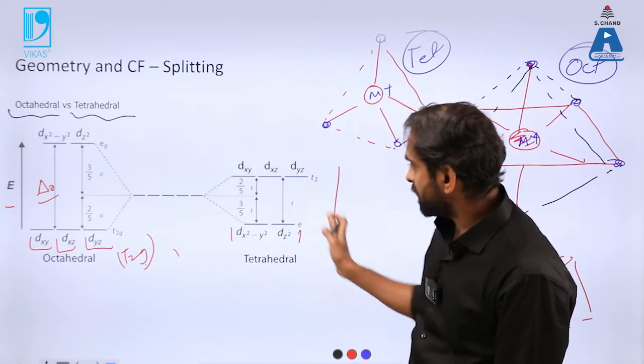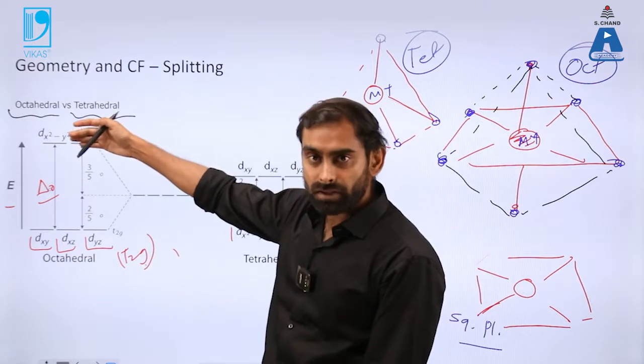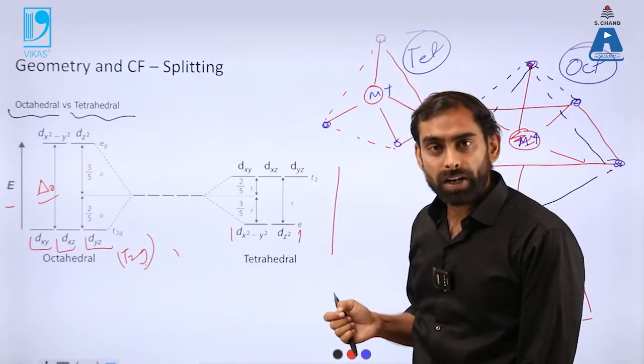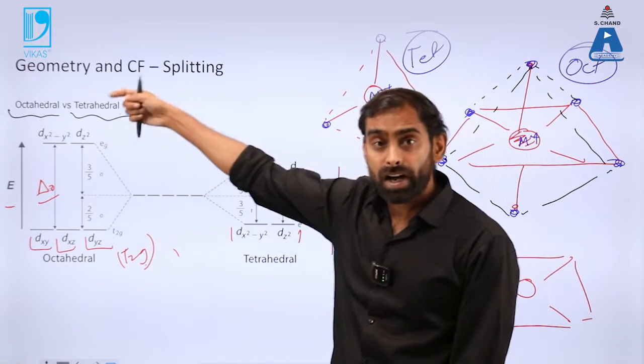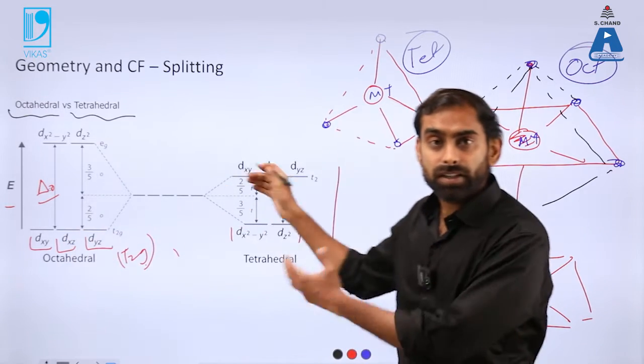That means x square minus y square and z square were having higher energy, whereas xy, yz, and zx were having lower energy. Here it is just opposite.